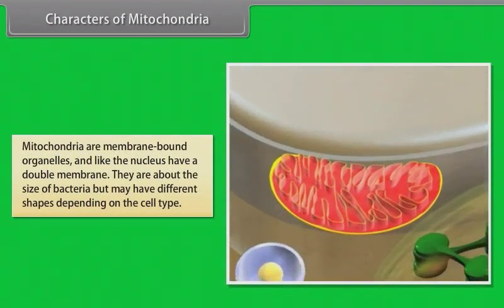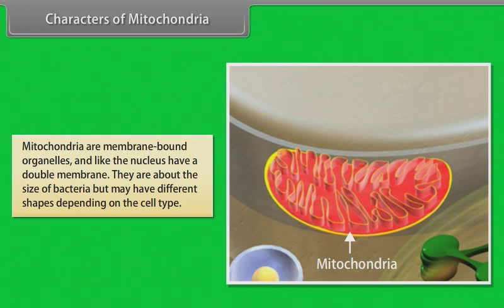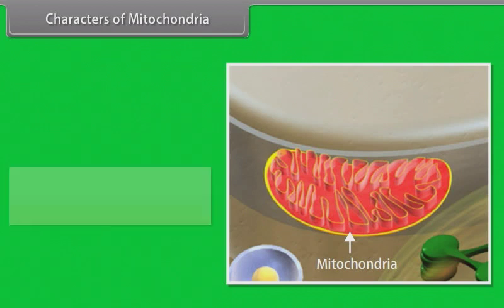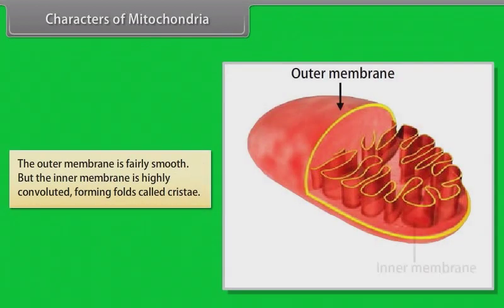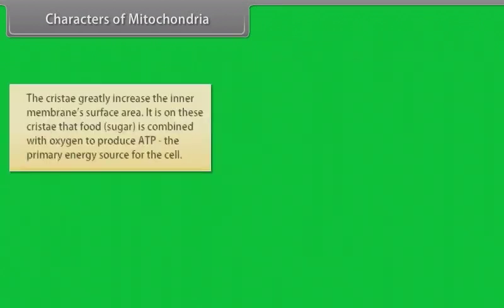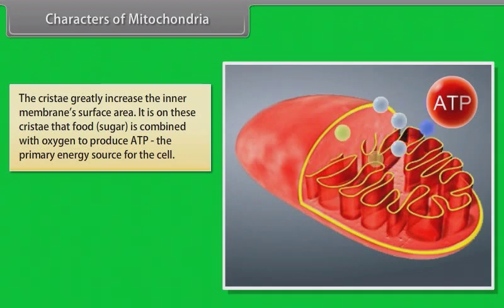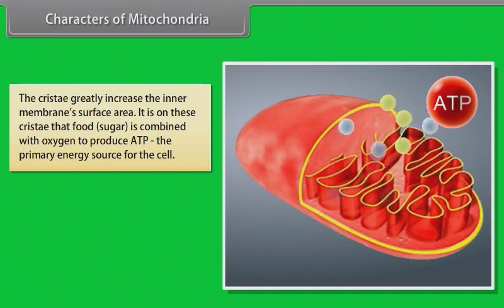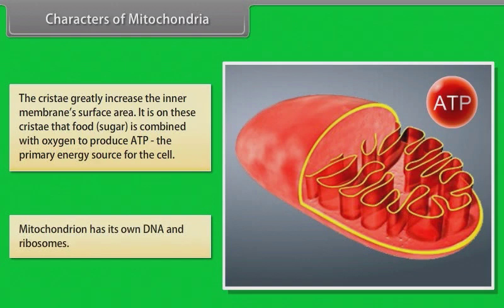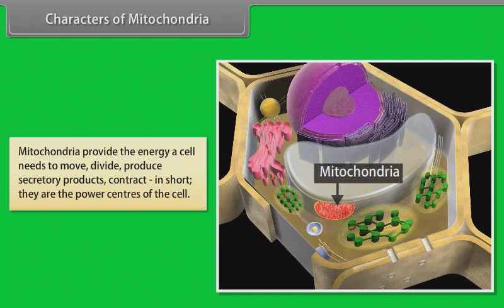Mitochondria are membrane-bound organelles and, like the nucleus, have a double membrane. They are about the size of bacteria but may have different shapes depending on the cell type. The outer membrane is fairly smooth but the inner membrane is highly convoluted, forming folds called cristae, which greatly increase the inner membrane's surface area. It is on these cristae that food sugar is combined with oxygen to produce ATP, the primary energy source for the cell. Mitochondria have their own DNA and ribosomes, and provide the energy a cell needs to move, divide, produce secretory products and contract — they are the power centers of the cell.